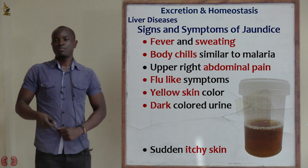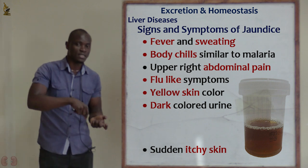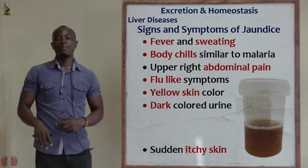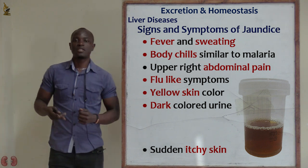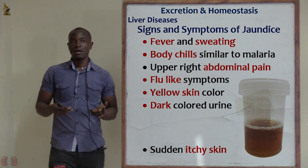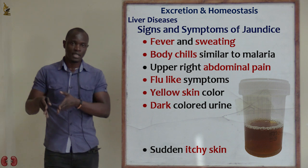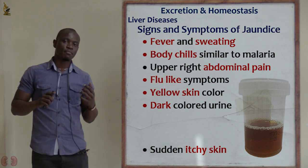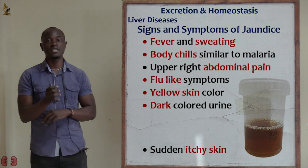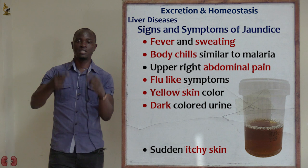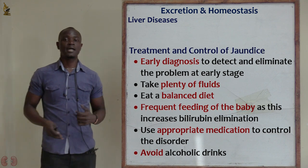The symptoms of jaundice include: fever, body chills where you feel cold but are sweating, abdominal pain, and flu-like symptoms. The skin becomes yellow in color, there is dark-colored urine, and the skin becomes very itchy — not just in one part but across the whole body.